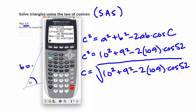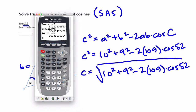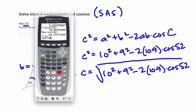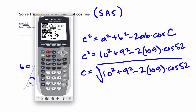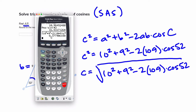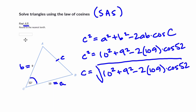Plugging it all in at once can save you quite a bit of time. Second square root of 10 squared plus 9 squared, minus 2 times 10 times 9, times cosine of 52. Make sure you press mode and check degrees — yes, I'm in degree mode. Hit enter, and I get my length. They want it to the nearest tenth, so it's about 8.4.